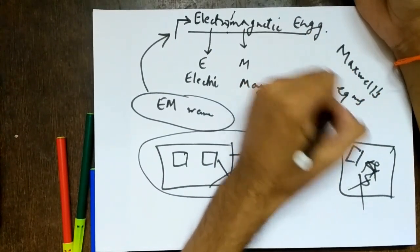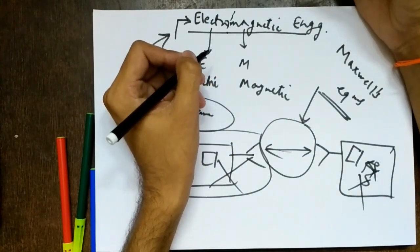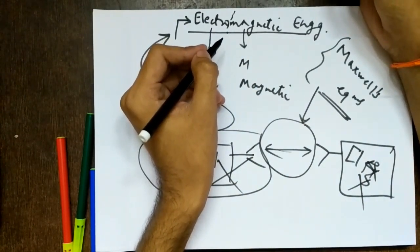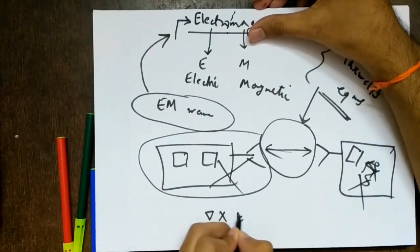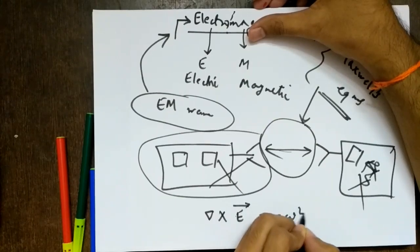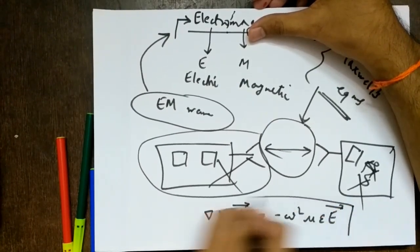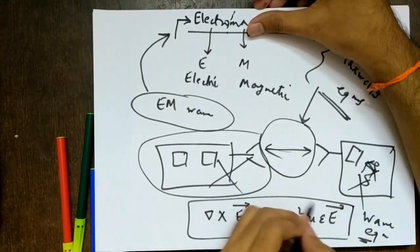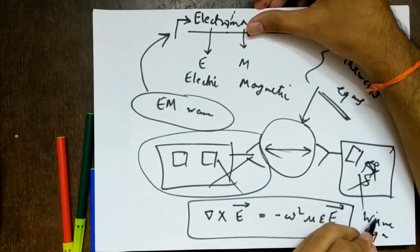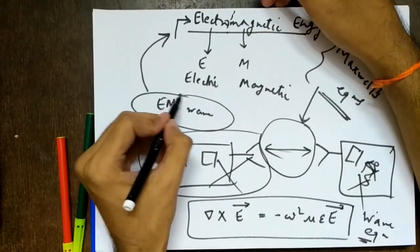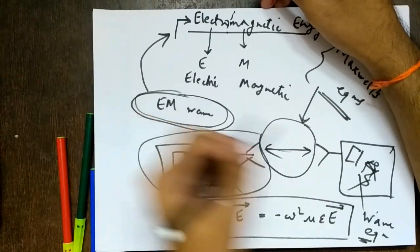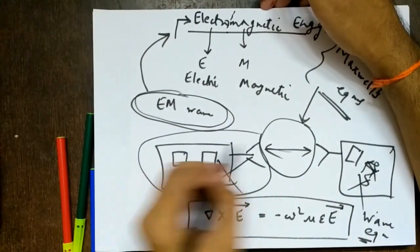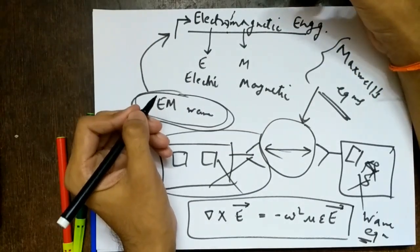For example, at one point we will study something called Maxwell's equations. You might have heard of them in physics but you will definitely understand them here. In Maxwell's equations there is one equation: del cross E vector equals minus omega squared mu epsilon E vector, and this equation is called the wave equation. This equation gave rise to all other subjects, because it is this wave equation which told us about electromagnetic waves and how they transfer.